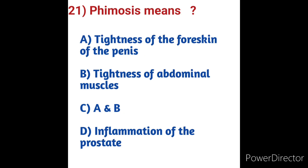Question number twenty-one: Phimosis means? Options: A) Tightness of the foreskin of the penis, B) Tightness of abdominal muscles, C) A and B, D) Inflammation of the prostate. Phimosis is a condition of the penis that occurs in some adults and children who aren't circumcised — the foreskin cannot be pulled back, meaning the penis has rings around the tip. Phimosis is normal in babies and toddlers and means tightness of the foreskin of the penis. Option A is the correct answer.